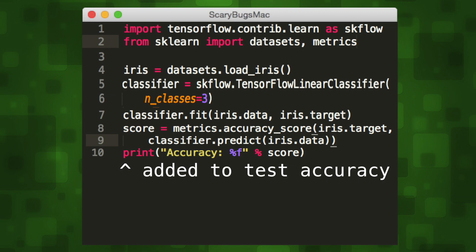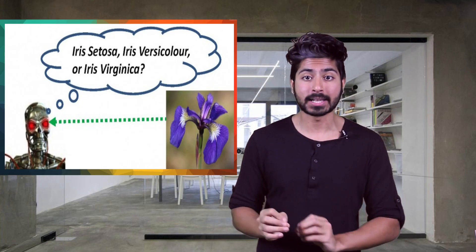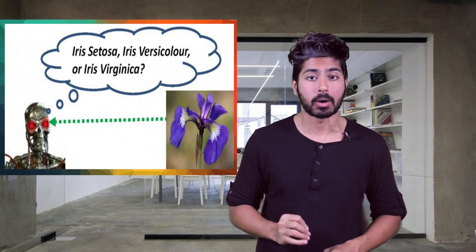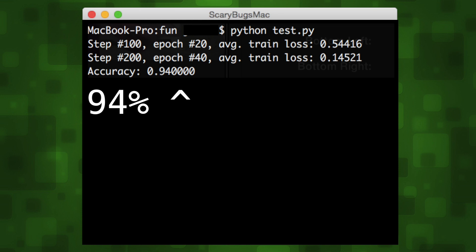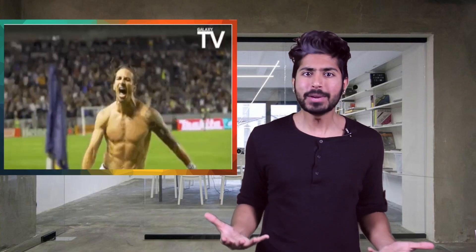Now whenever we input a new flower from our testing dataset, it'll automatically be able to classify it as one of the three types of iris flower. We can see in terminal that the accuracy score for classification is pretty high. How easy was that?